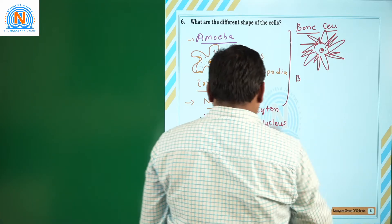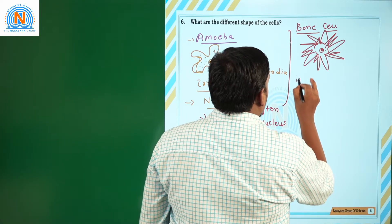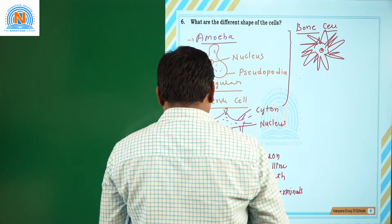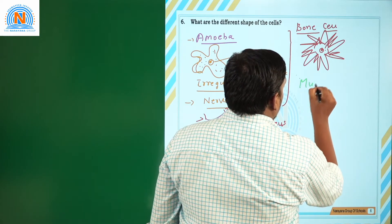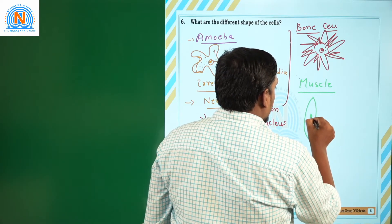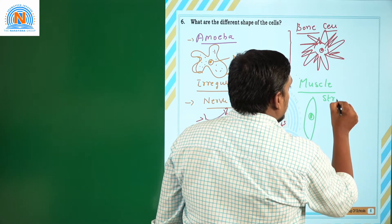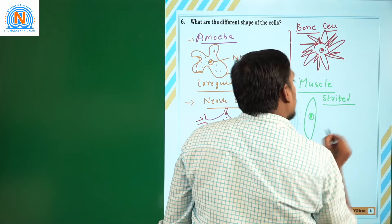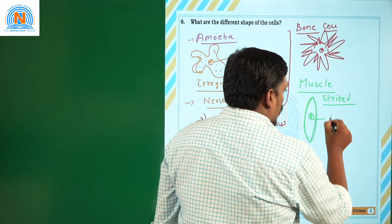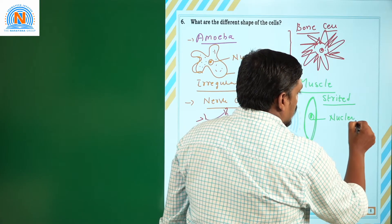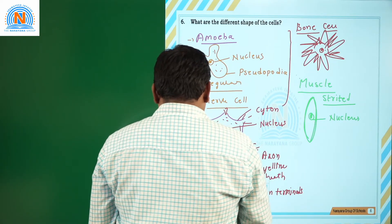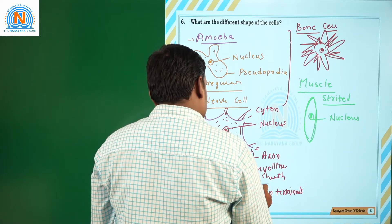If you take a muscle cell, muscle cells are of three different shapes. Some muscle cells, like striated muscle cells, have a striated structure with a prominent nucleus. Whereas some other muscle cells have a non-striated structure. These are the various types of cells seen in our body.